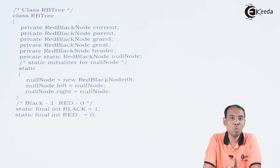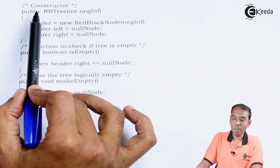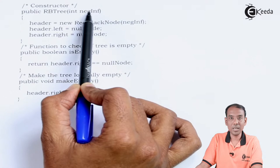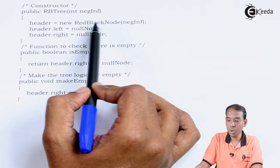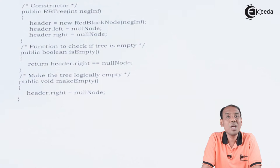Now we move to the constructor of the RBTree class. We write public RBTree with parameter int negInf. Header is set to new RedBlackNode of negInf. Then we set header.left equal to nullNode and header.right equal to nullNode. This is how we initialize the header's left and right through the constructor.